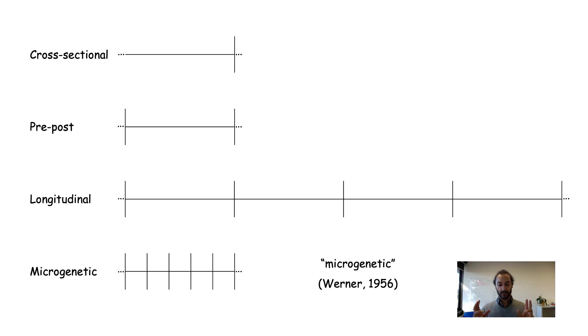The microgenetic term was introduced by Heinz Werner in 1956 in relation to a series of what he called genetic experiments where he was looking at cognitive development in students and the micro changes in their psychological states. Micro means small, genetic means origin or genesis, so we're trying to use this fine-grained approach to identify the origin of the change.